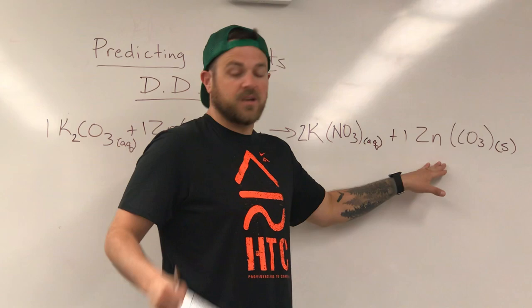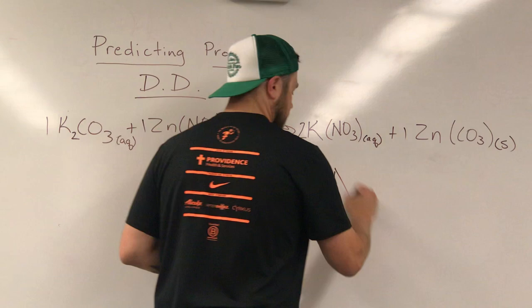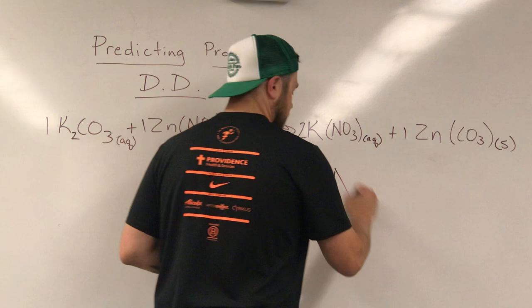Had this thing formed something that said S next to it on our sheet, we would write AQ and then we would write a big no reaction because it wouldn't happen, but because we're lucky enough to have that S right there, this reaction is good to go. Good luck.